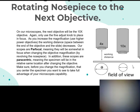Two terms I want you to know: parfocal means that when I start at 4x and swing the objective to 10x, it'll be somewhat in focus already. Paracentric means that when I move the stage to find a group of cells and then switch to the next objective, they'll be in pretty much the same position in the field of view. These are features we pay extra money for — it's a huge amount of work to try to overcome not having them.